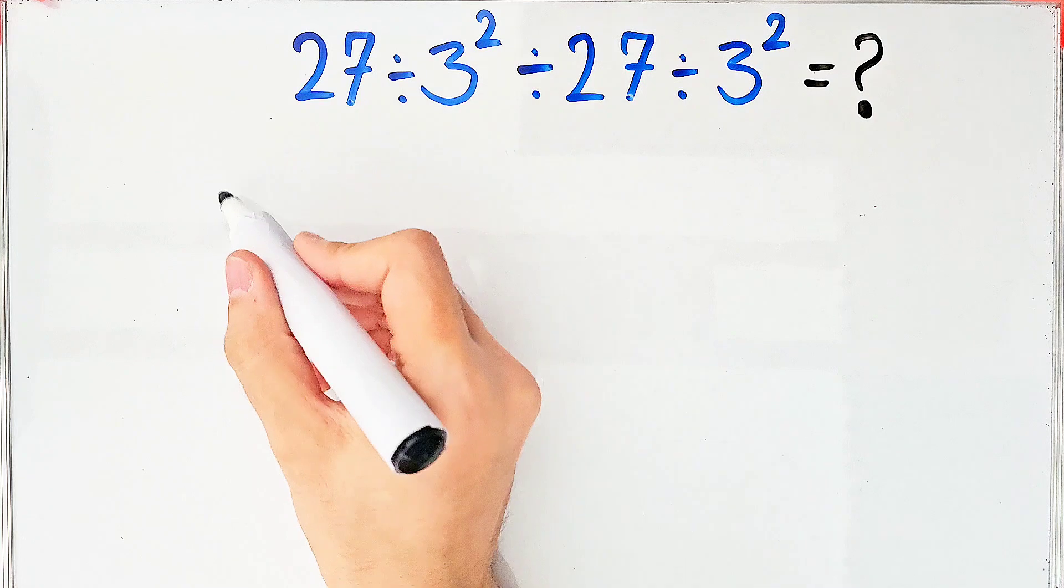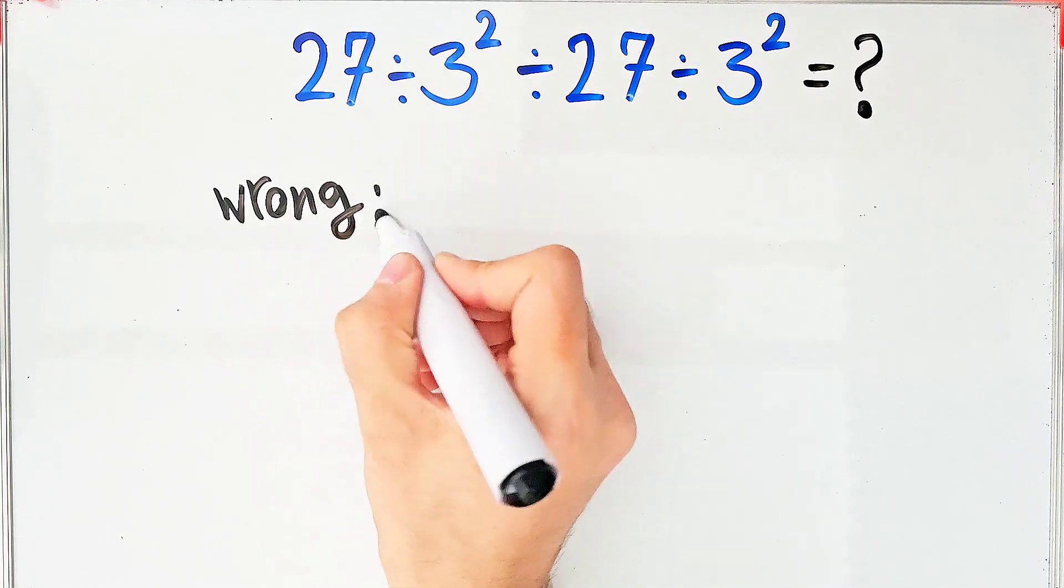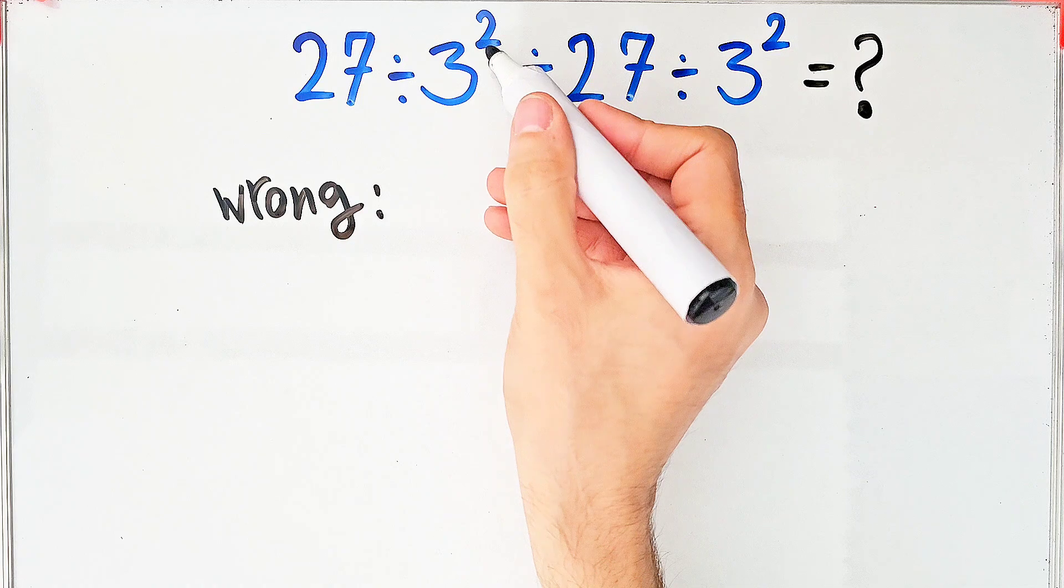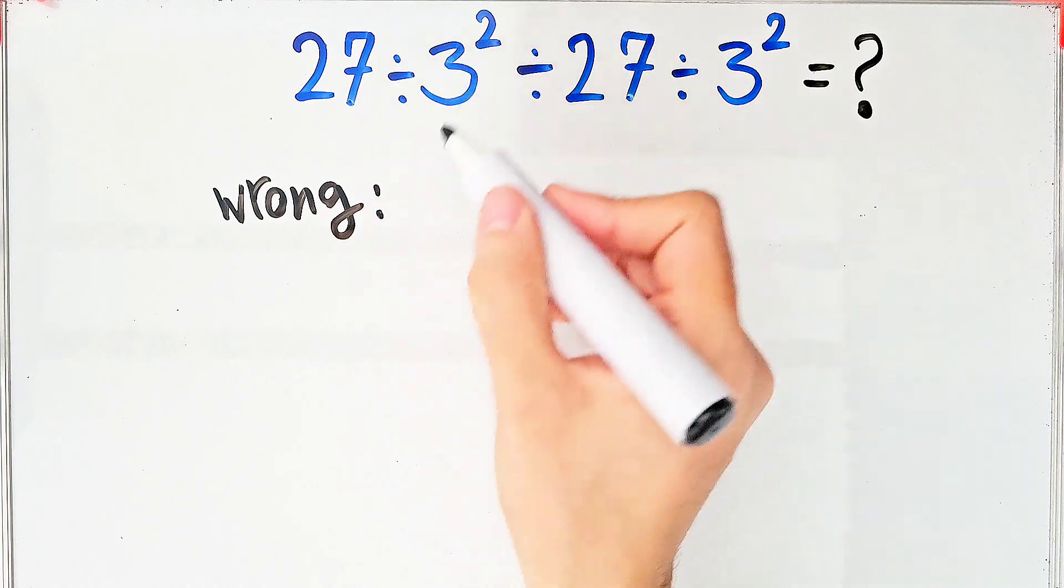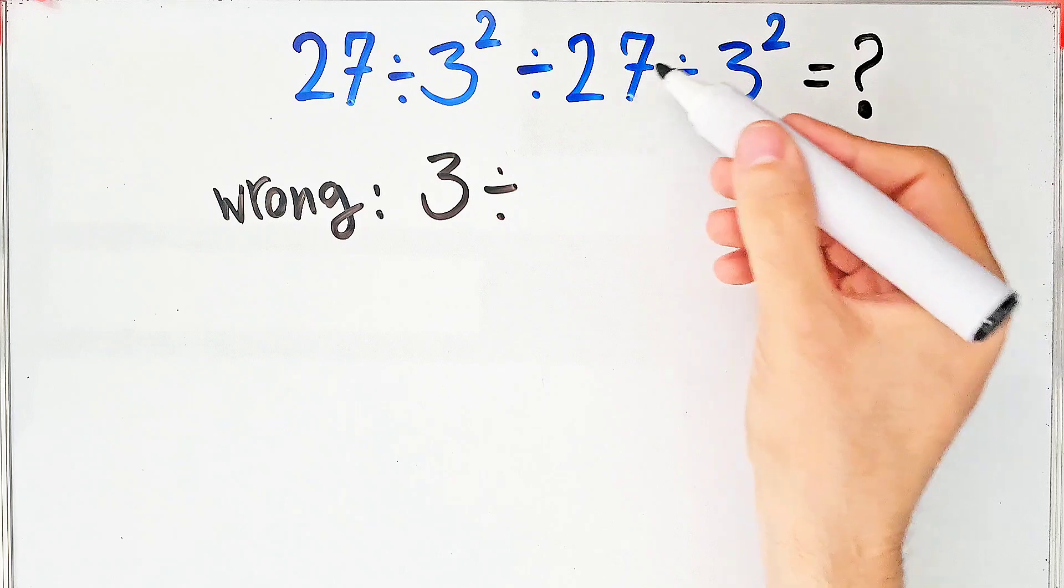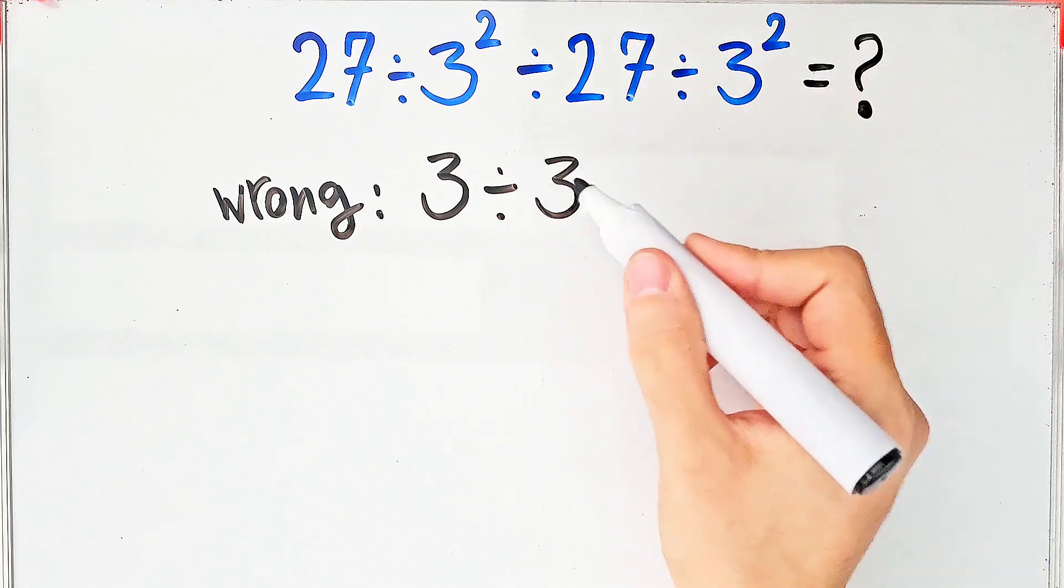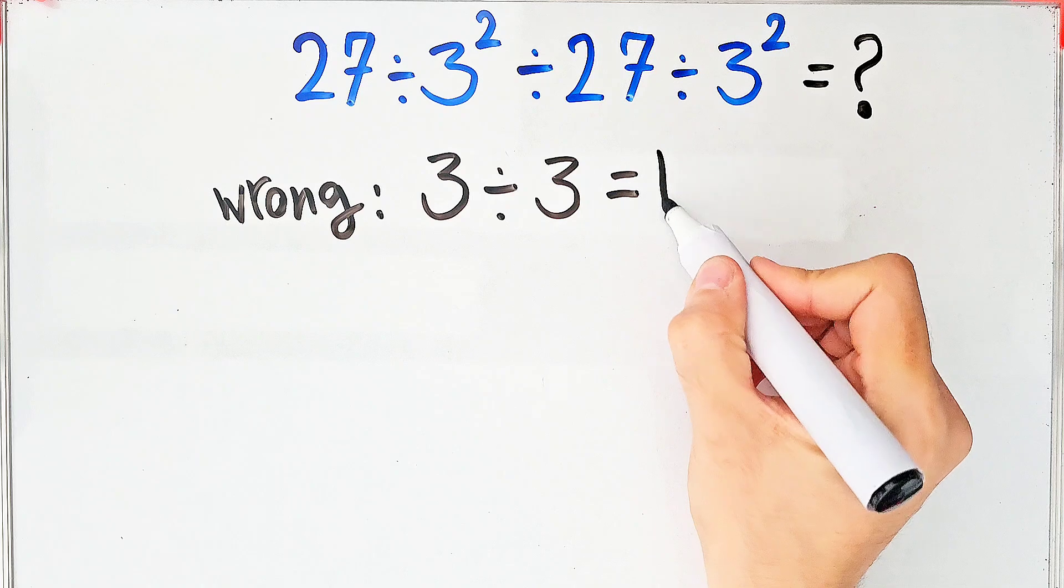In the wrong way of solving this question, some people solve it like this. They say 27 divided by 3 to the power of 2, which equals 9, equals 3. Again, they say the answer of the second part equals 3, and the final answer of this question equals 1.